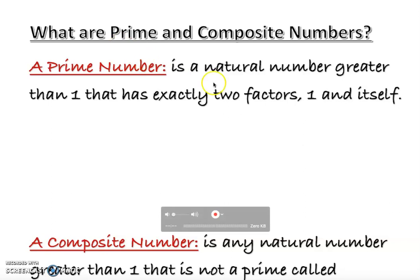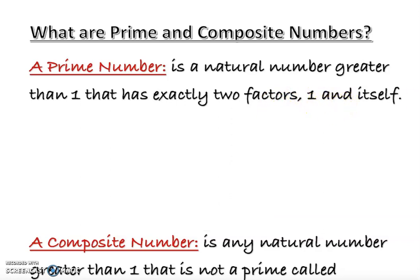A prime number is a natural number greater than one that has exactly two factors: one and itself. Let's analyze what that actually means. A natural number is basically one, two, three, four, five, and so on.